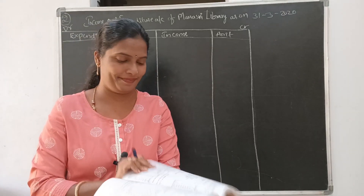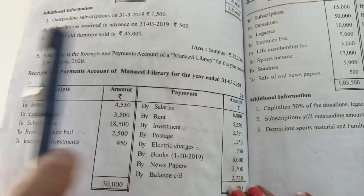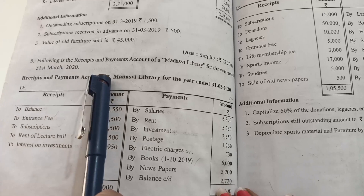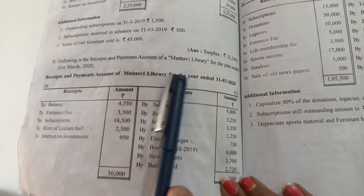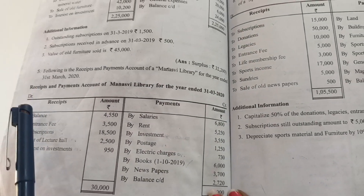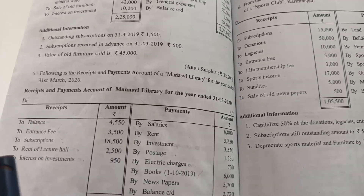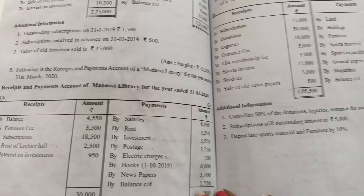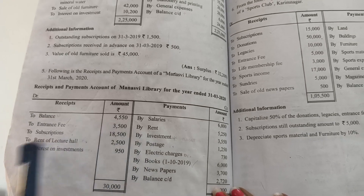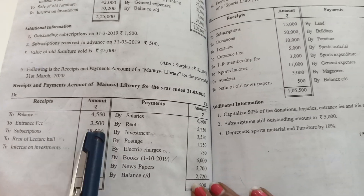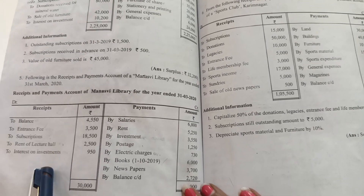Without any delay, shall I read the problem? The following receipt and payment account of Manasvi Library for the year ended 31st March 2020. Balance 4550 — we won't take that in the income and expenditure account. Entrance fees 3500, subscriptions 18500, rent of lecture hall 2500, interest on investments 950. These are all the receipts.